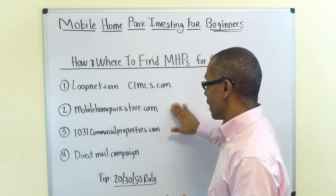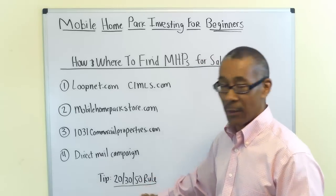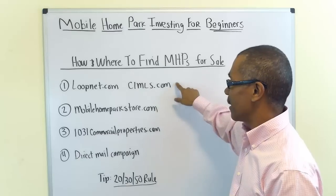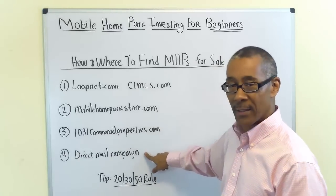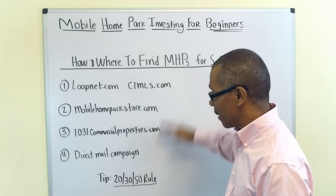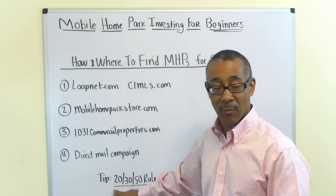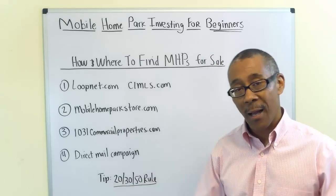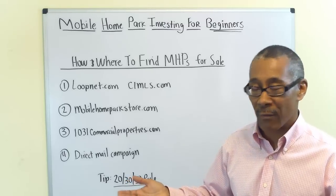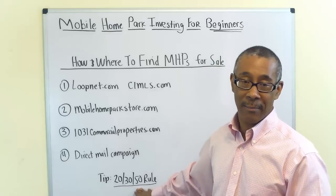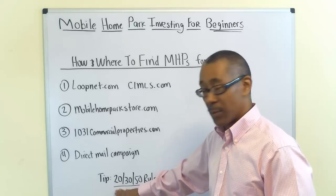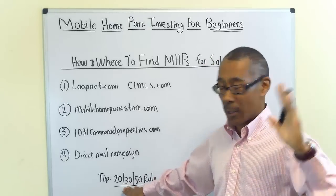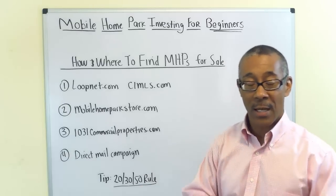A tip on using these four techniques: the 20-30-50 rule. Out of any number of deals you find, 20% will be considered good when the owner is motivated. 30% will be borderline — they may sell in a few months. The other 50% are overpriced and owners are not motivated. Focus on the 20%.